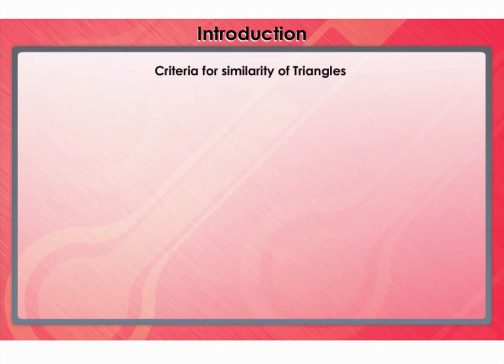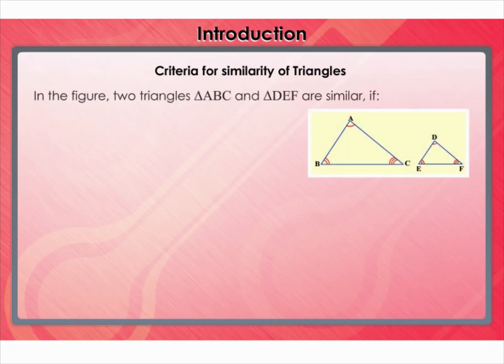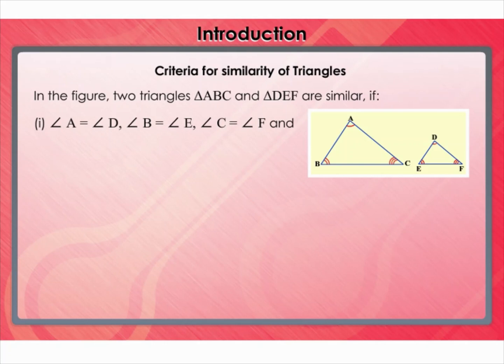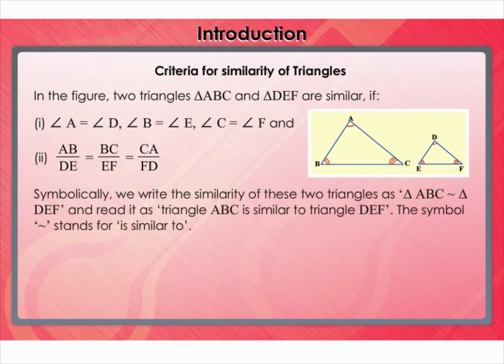Criteria for similarity of triangles. In the previous section, we learned that two triangles, triangle ABC and triangle DEF, are similar if angle A equals angle D, angle B equals angle E, angle C equals angle F, and AB/DE equals BC/EF equals CA/FD. Here, A corresponds to D, B corresponds to E, and C corresponds to F. Symbolically, we write it as shown.